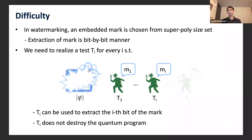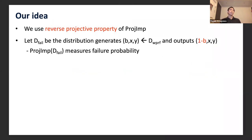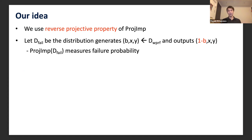Our main idea is to use what we call the 'reverse projective property' of projective implementation. Let D_fail be the distribution that generates (b, x, y) from D_wprf and outputs (1−b, x, y). Since D_wprf corresponds to the weak PRF security game, a projective implementation for D_fail is a measurement that measures the failure probability of a quantum program. This is because projective implementation for D_fail measures the probability that the outcome of a quantum program is not b given (x, y).